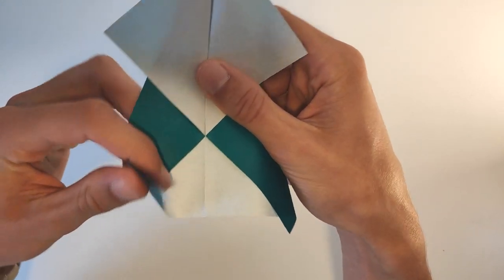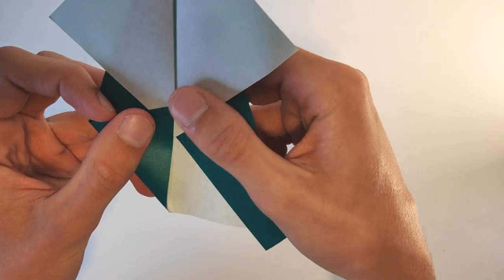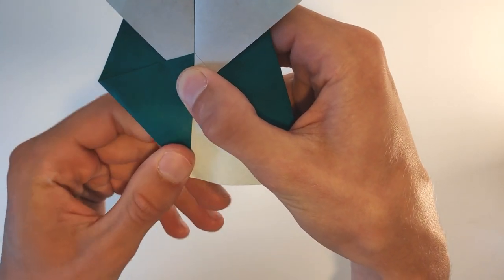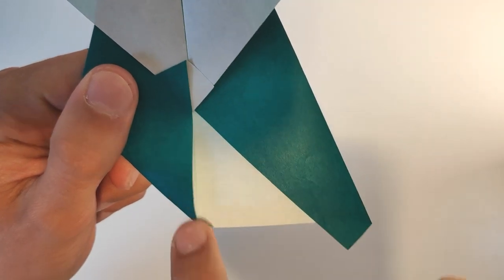Now fold these two bottom flaps up to the middle crease. And align them like this.